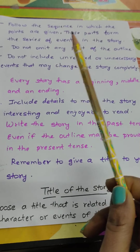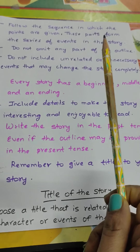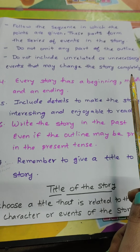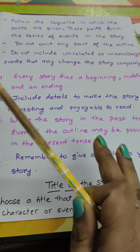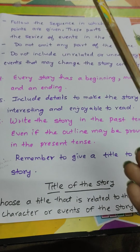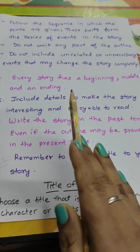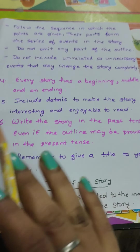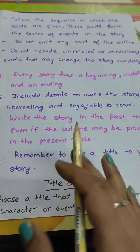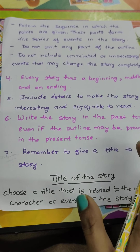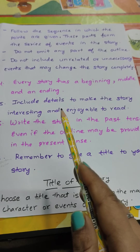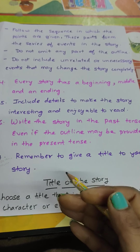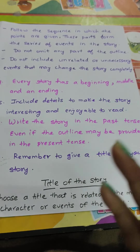Fifth: do not omit any part of the outline. Do not add unnecessary events to the story that would change it. Write the story according to the outline only — follow only the given points. Do not write anything extra or unnecessary that changes the story. Also, remember: every story has a beginning, middle, and ending, just like a movie has a beginning, middle, and end.